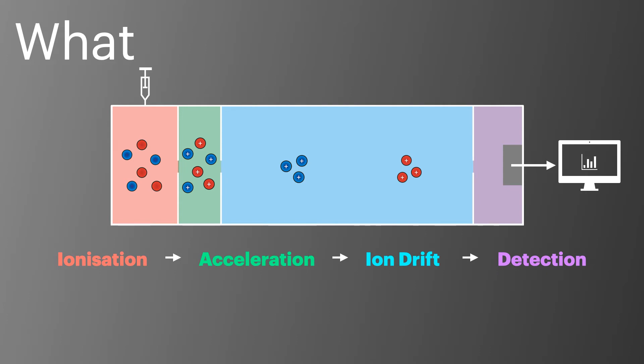There are four main steps to how a mass spectrometer works. First, a sample is placed in the machine and it's ionized. These ions are then accelerated using an electric field and sent into a flight tube or ion drift. At the end of the drift, they're detected and their abundance is measured along with how long it took to travel the length of the flight tube. This data is then used to calculate the mass of the ion.